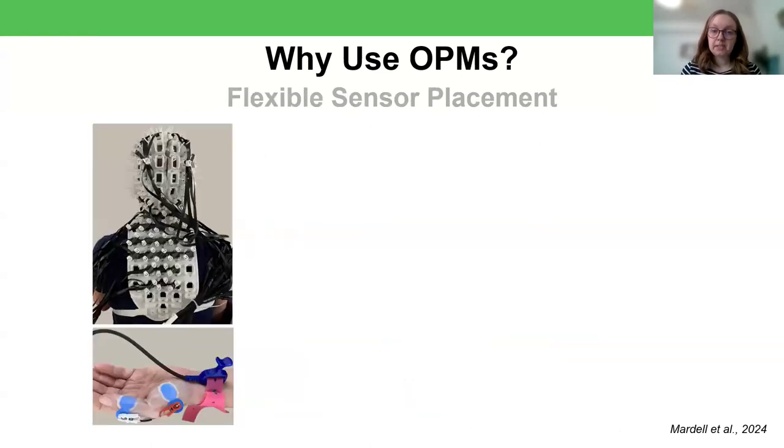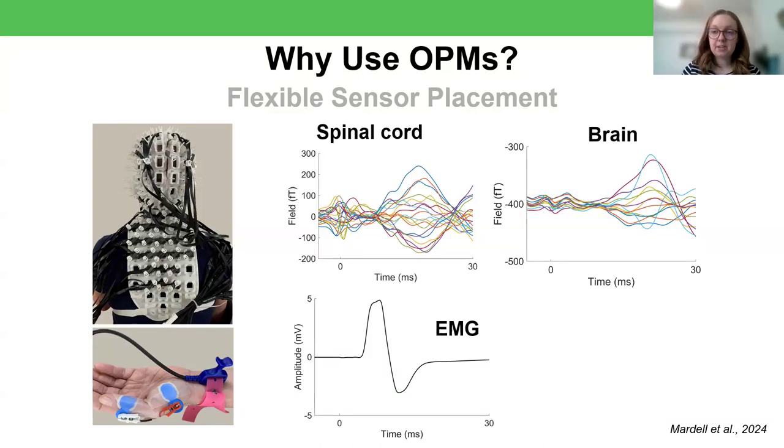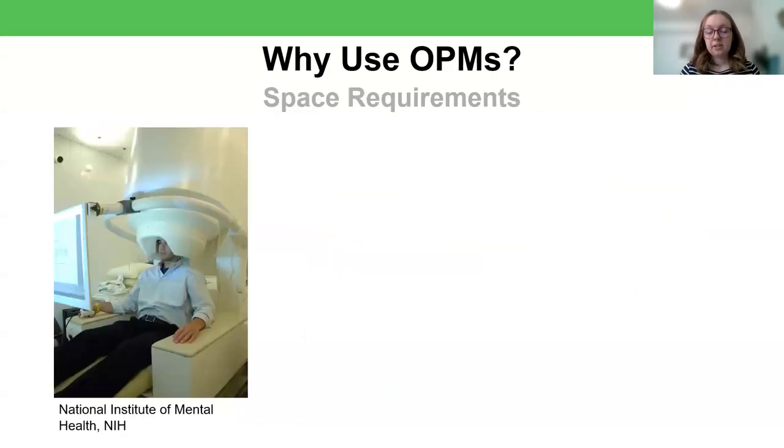Another argument for using OPMs is that the sensors can be placed really flexibly. Sometimes this is done in order to get high sensor coverage in a particular region of the head or to look at a particular region of the brain. In this case, they've used some sensors on the head and some on the back in order to concurrently look at signals from the brain and the spinal cord. And this means that really for the first time in MEG, we can look at the relationship between the spinal cord and the brain.